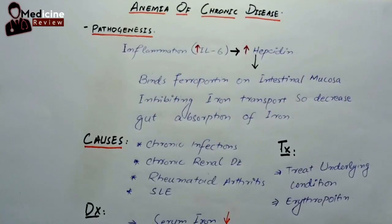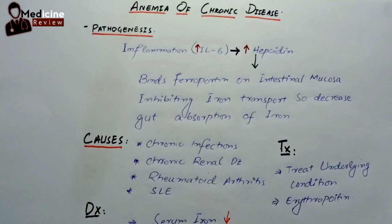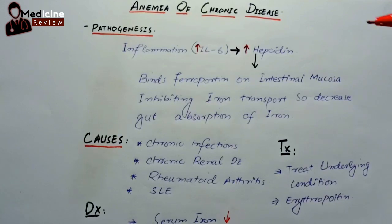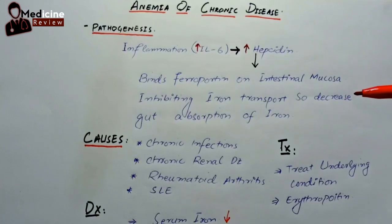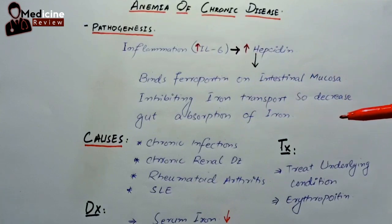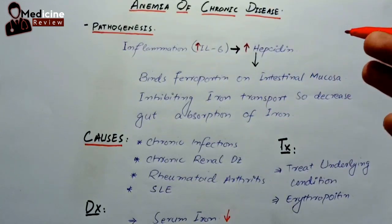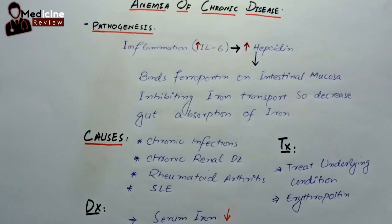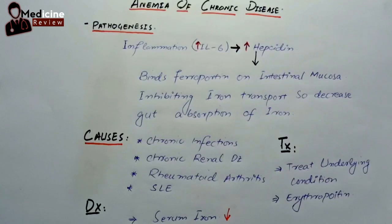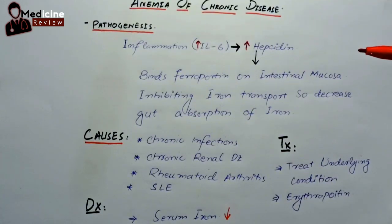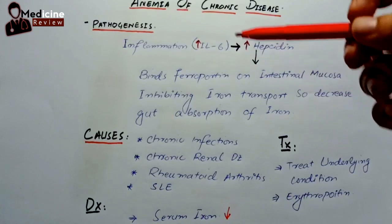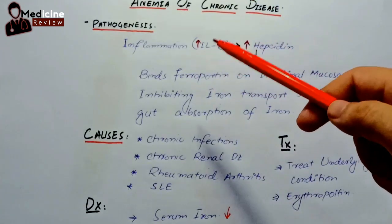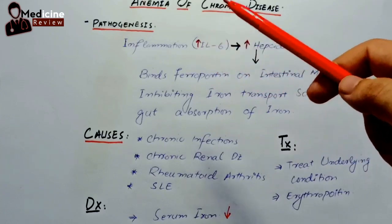Bismillahirrahmanirrahim. Assalamu alaikum. This is Dr. Osman Akhtar. In today's video we are going to review anemia of chronic disease. It is a type of microcytic hypochromic anemia, but it can also be included in normocytic hypochromic anemia, where the reticulocyte count is decreased.